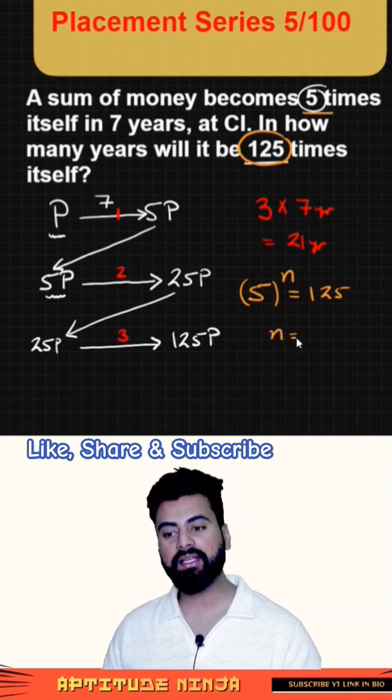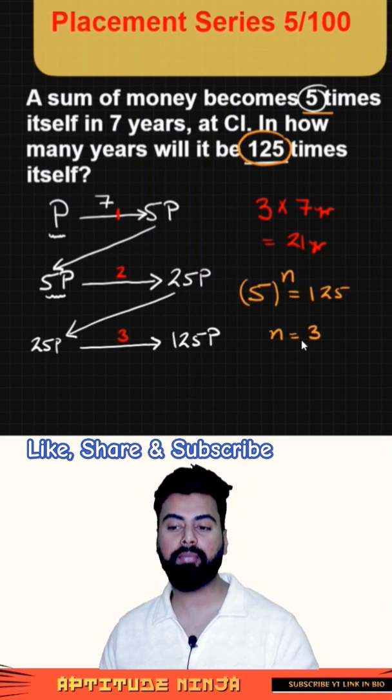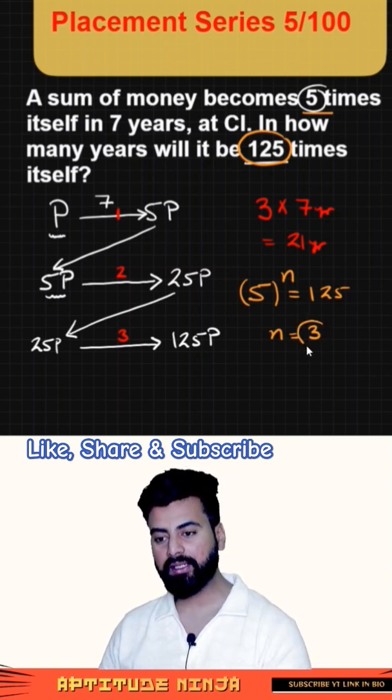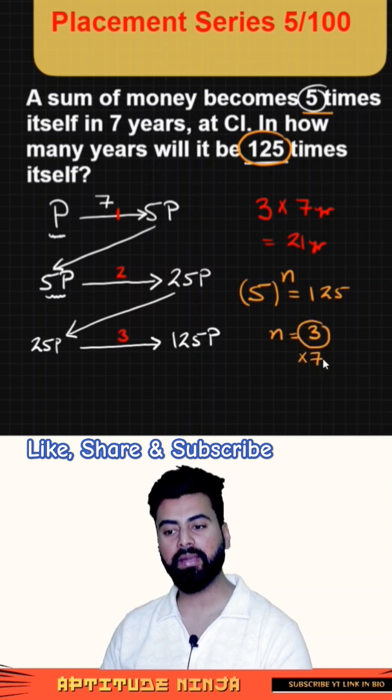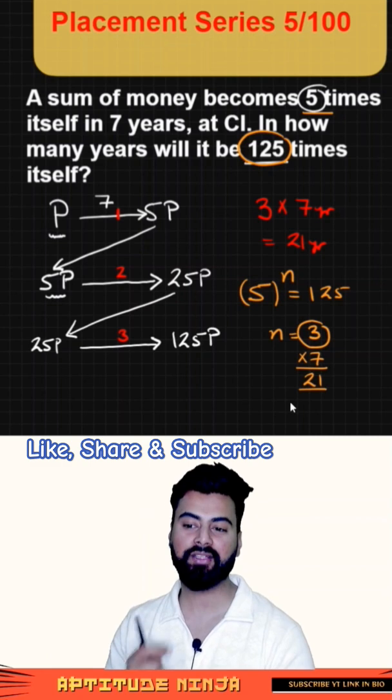So from here, what is the value of N? It is 3. Now if you ask me what is N? N is the number of compounding periods. It means I need 3 compounding periods, where length of each compounding period is 7. So when you multiply these two, you get the same answer 21. This is how easily you could have answered this question by applying this shortcut.